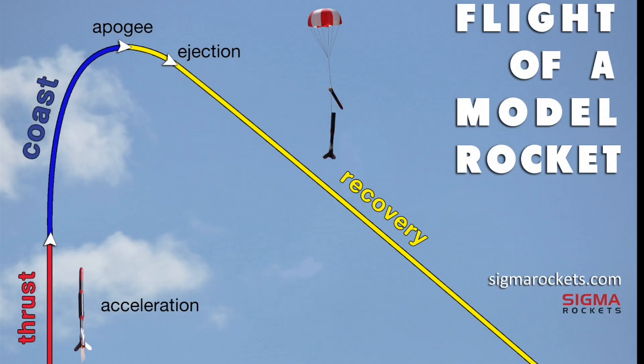As we can see in our picture, this is the amount of time taken from coast through apogee and right to ejection.